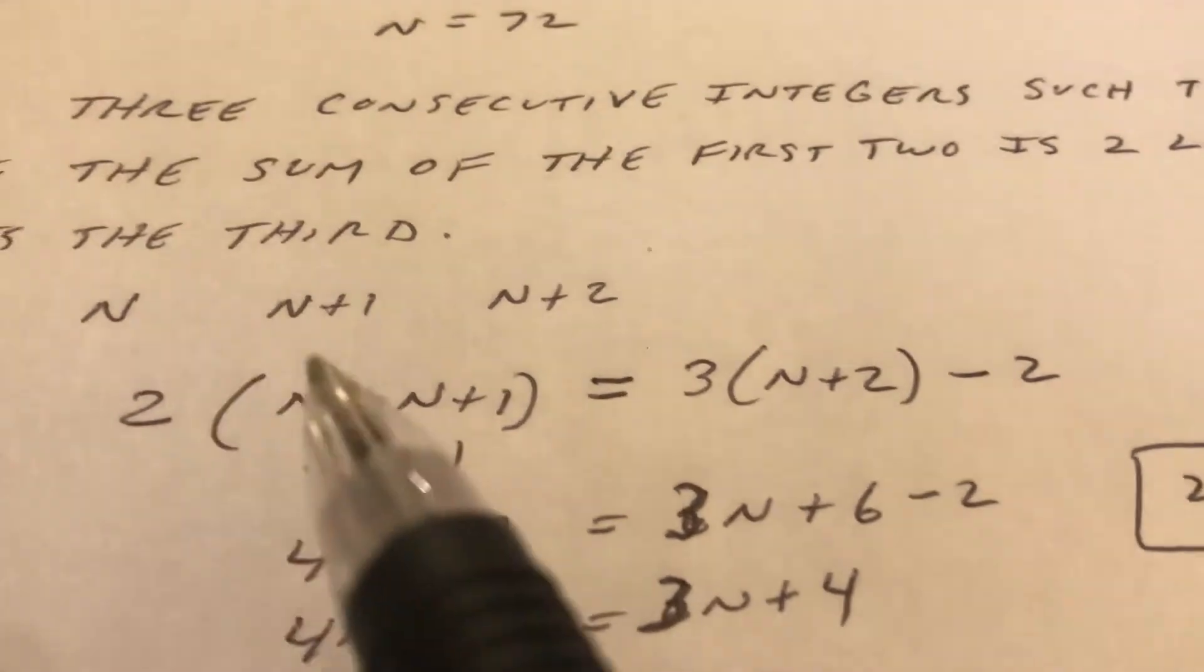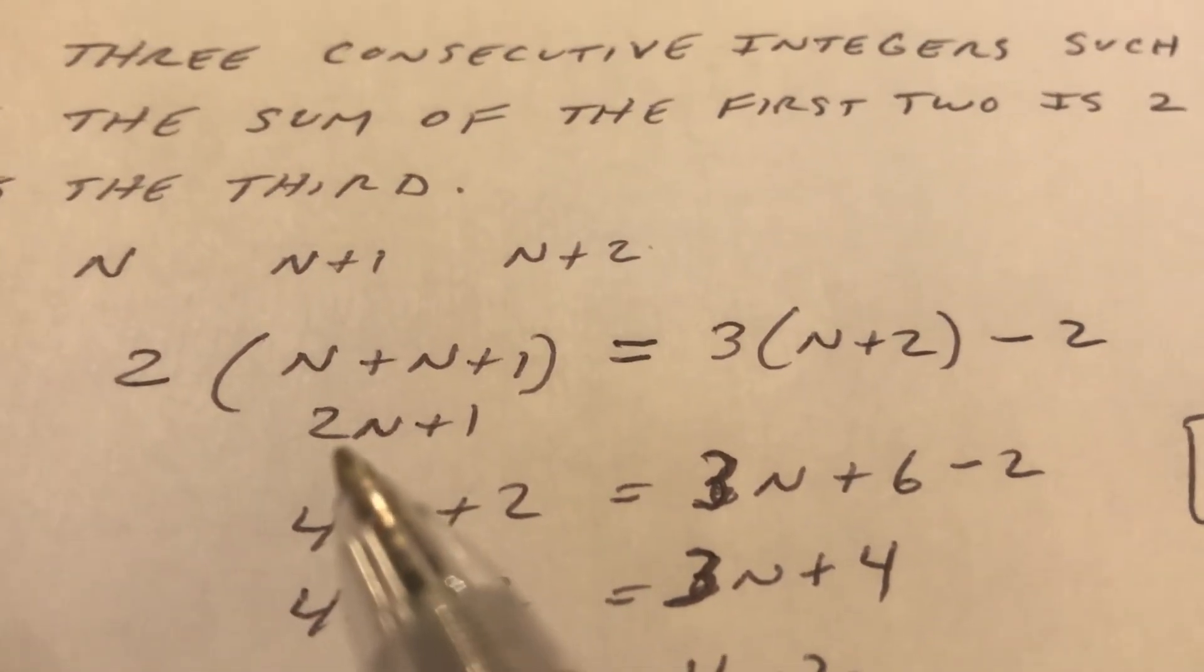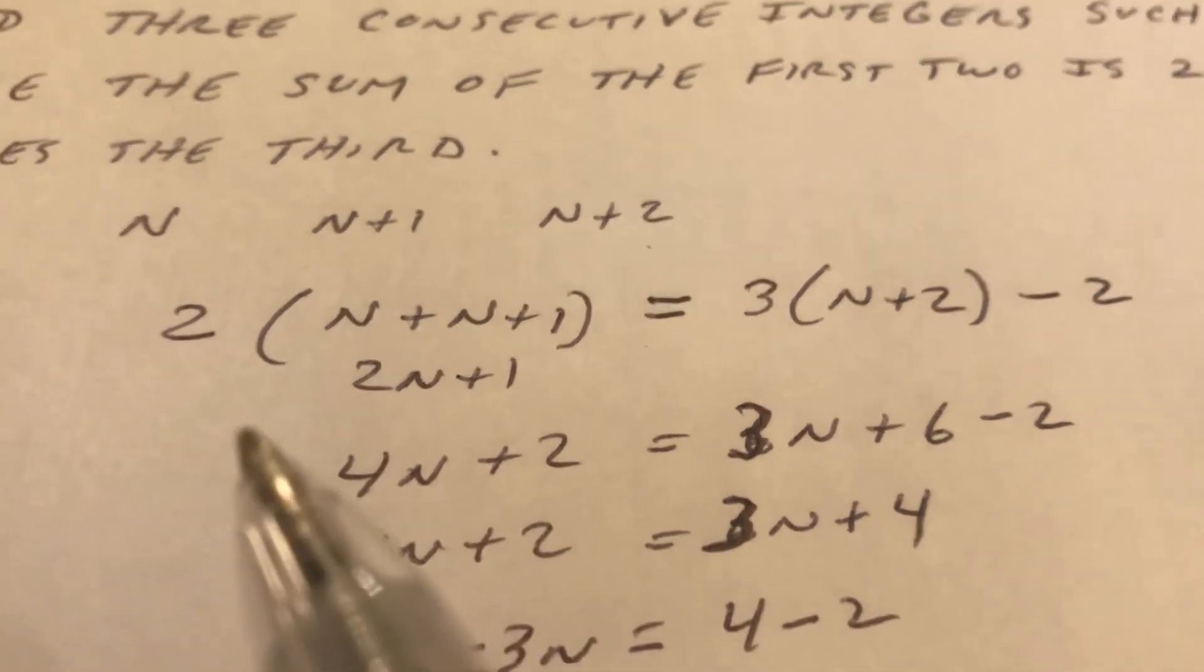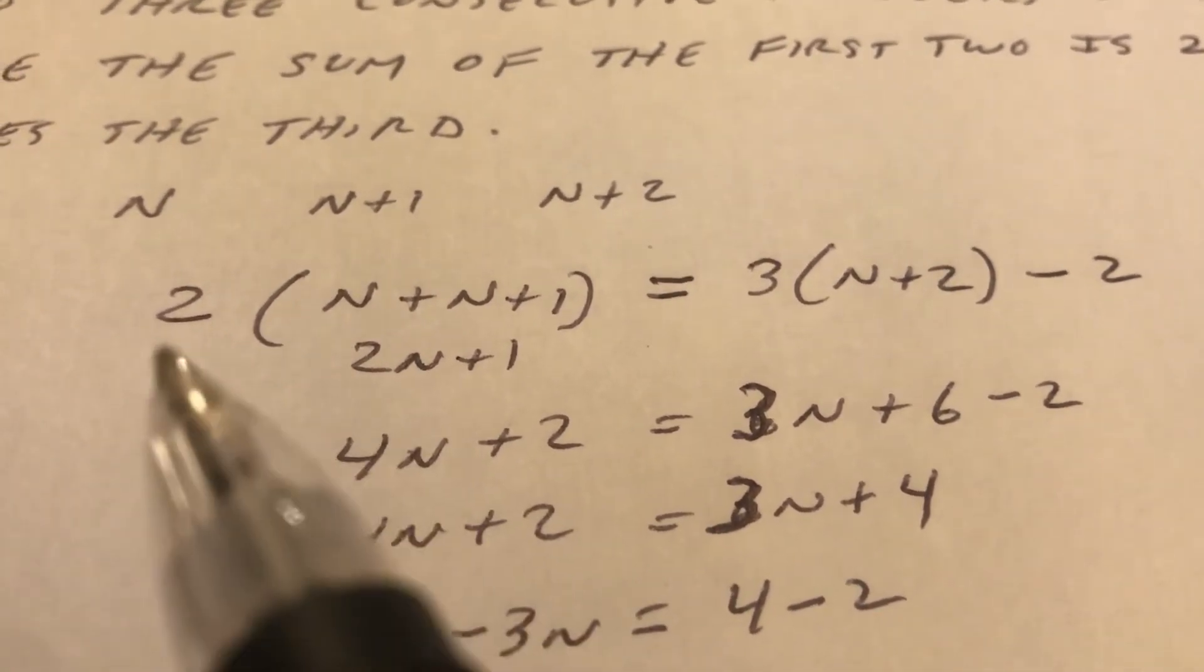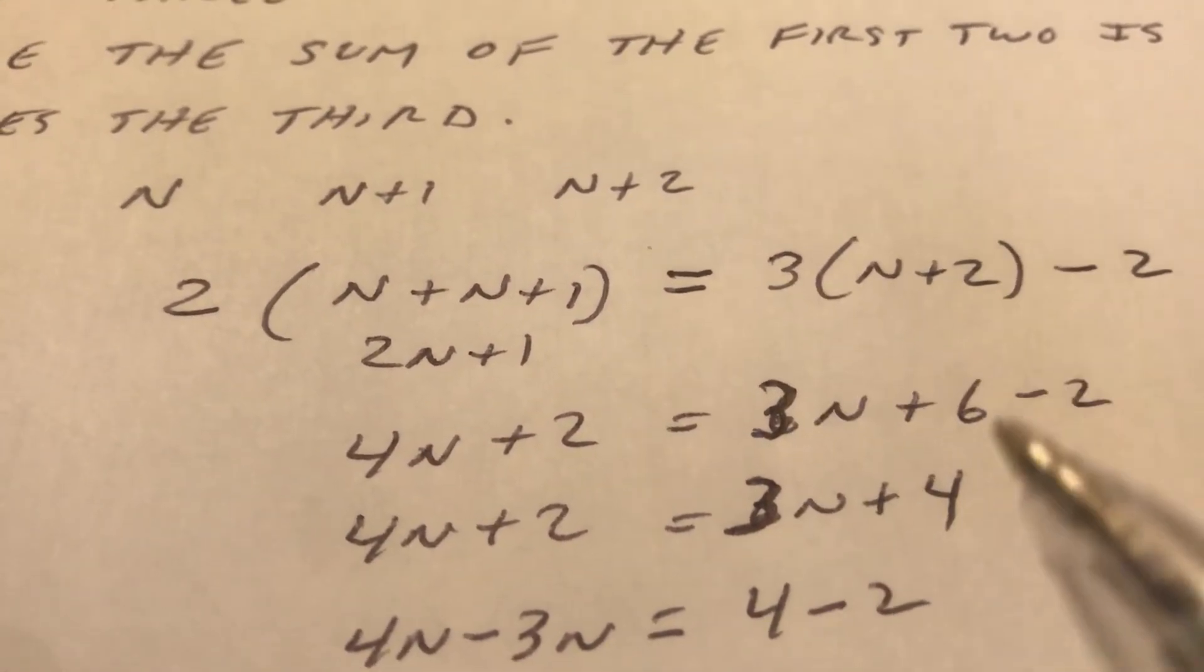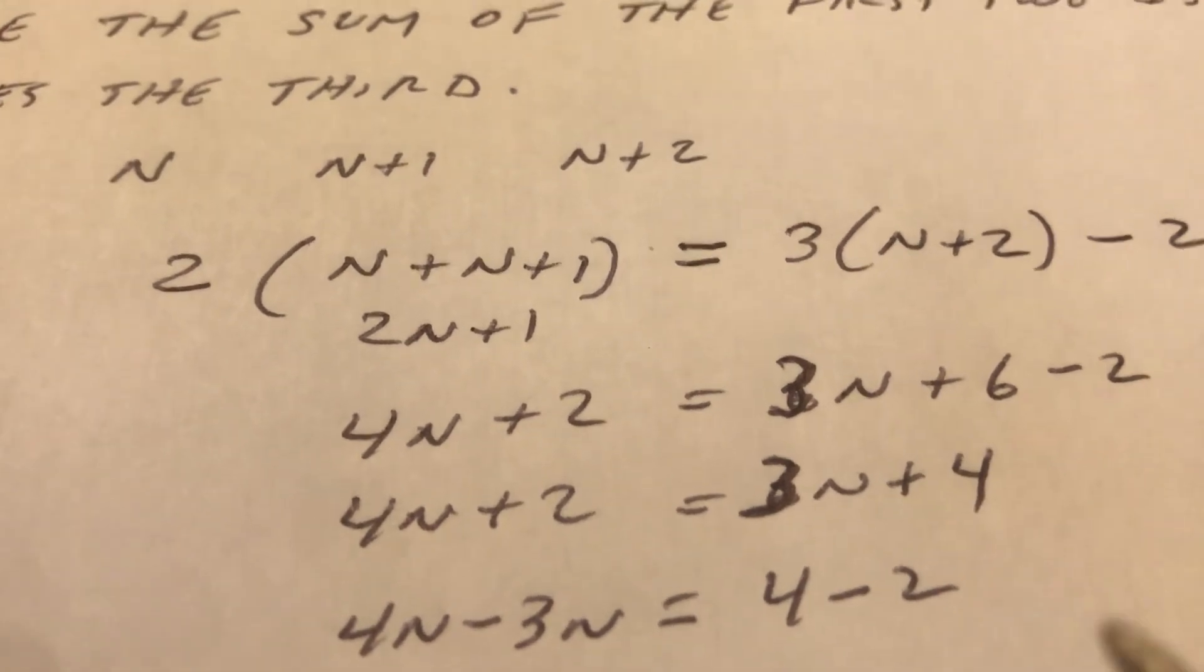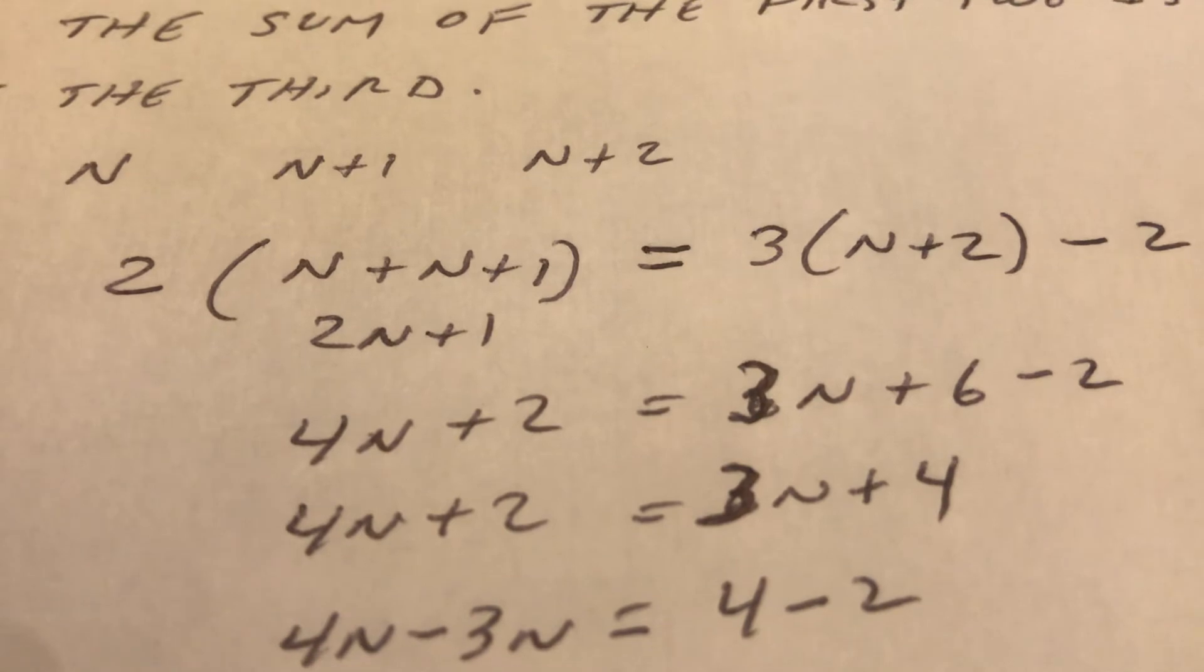I always do the work inside the parentheses first. So n plus n is 2n. And then we use the distributive property. Two times 2n is 4n. Two times one is two. Three times n is 3n. Three times 2 is 6 minus 2. I simplify each side separately. The 6 minus 2 is 4.